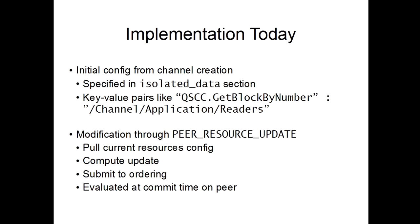As implemented today, the ACLs for a channel are specified initially during channel creation. They're specified in a field called isolated data, which is a map under a key. The ACLs are specified as key-value pairs, following a convention of resource, function, name, and then a string pointing to a particular policy. For example, qscc.getblockbynumber maps to channel application readers.